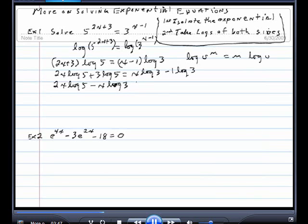Then I want all my non-x terms on the right side, so I'm going to take the 3 log 5, which is a non-x term, and I'm going to move it to the other side. So I'll have negative the log of 3 minus 3 log 5.